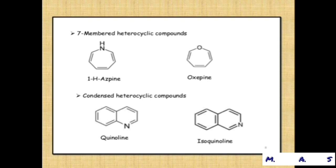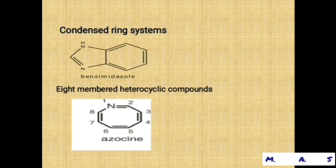Condensed or fused heterocyclic compounds: first example is quinoline, formed from a benzene ring and a pyridine ring attached together. Second is isoquinoline, also with a benzene ring and nitrogen present. Eight-membered heterocyclic compounds — example is azocine.